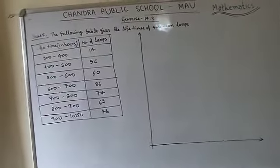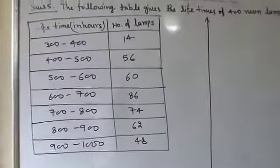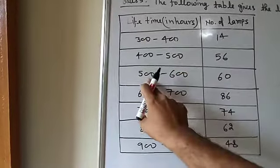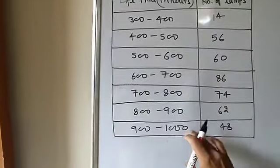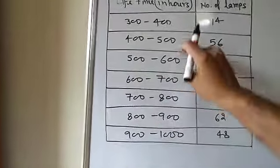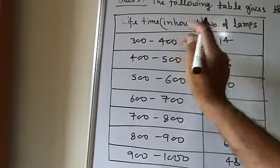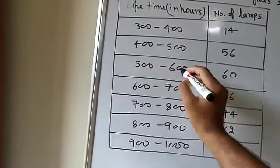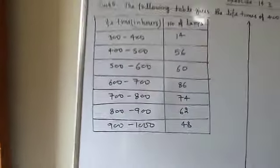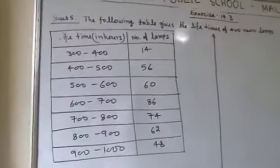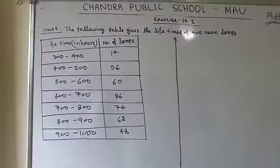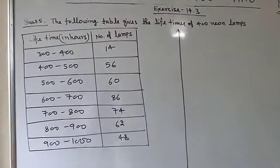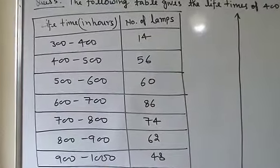Before drawing the histogram, you need to check certain things. First, check the class size: 400 minus 300 is 100, 500 minus 400 is 100 — each class has the same size of 100. Next, check if it is continuous or discontinuous. Here 300 to 400, then 400 to 500, then 500 to 600 — it is continuous. In the previous question number 4, the table was discontinuous and needed conversion, but here it is already continuous, so no changes are needed. The same table can be used to draw the histogram.